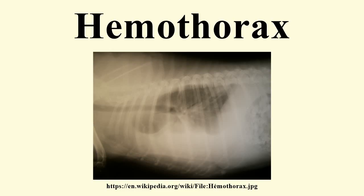In upright radiography, hemothorax is suggested by blunting of the costophrenic angle or partial or complete opacification of the hemithorax, in which the lateral side of the chest appears bright and the lung appears pushed away toward the center. In the case of a small hemothorax, several hundred milliliters of blood can be hidden by the diaphragm and abdominal viscera. In supine patients, signs of hemothorax may be subtle, as the blood layers in the pleural space and can be seen as a haziness in one half of the thorax relative to the other side.